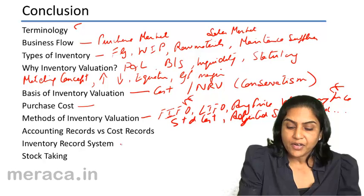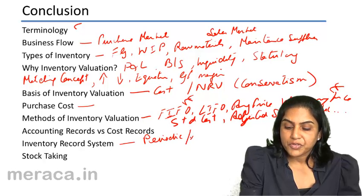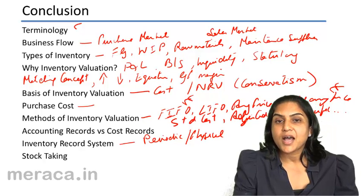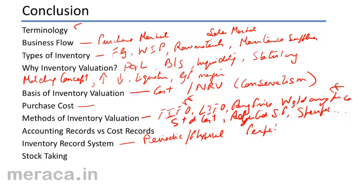We then moved on to the inventory record system, where we said there were two types. One was periodic or physical, wherein we counted stock, assigned a value, and arrived at the closing stock of inventory. The other was perpetual or continuous, wherein records are kept and a balance of inventory is ascertained after every receipt and after every issue. Therefore, we know the value of stock at any point in time by looking at the stock records — these records being the store's ledger.